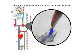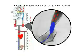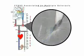These venous obstructions or narrowings can be dilated by means of a balloon, thus restoring a normal blood flow.